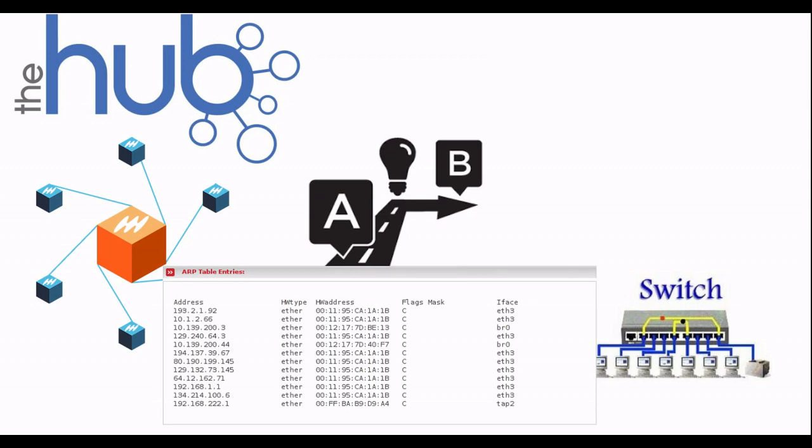In the ARP table, there is an IP address. The MAC address is connected to the switch port. There is a table. If you are connected to the switch, then the switch gets updated. When you are connected to a switch, the data has a header. This IP is connected to the MAC, and the MAC is connected to the port.